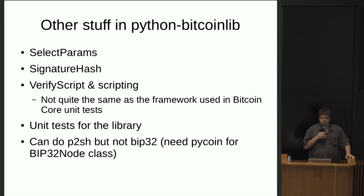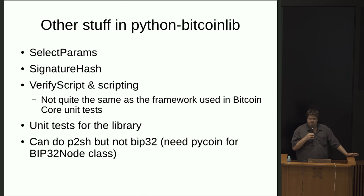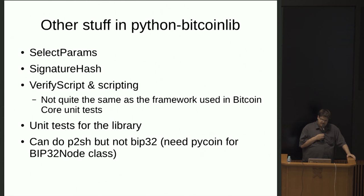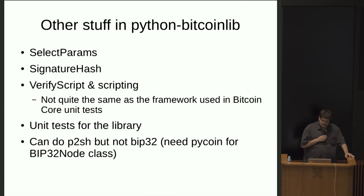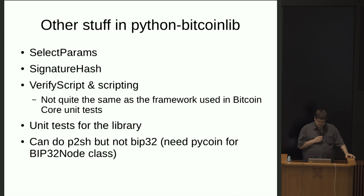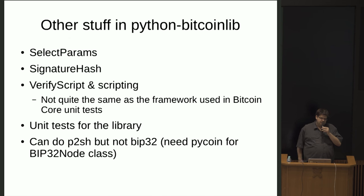The library helps you use both testnet and mainnet, switching through a function called select_params. Signature hash is for transaction signing — hashing the transaction in the correct format so that you can sign it. It does have transaction signing capability using OpenSSL, although you should probably not intend to use it for production. Perhaps for testing it's fine. Verify script seems to be consensus correct — you can run a script through it and check whether it returns true or false. There are unit tests, and you can do pay-to-script-hash like for multi-sig, although it doesn't implement BIP32. For that I often use PyCoin's BIP32 node implementation.